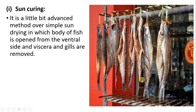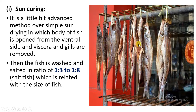The next method is sun curing, which is a more advanced method. In simple sun drying, the body of the fish is opened from the ventral side. The important internal organs and even the gills are removed, because gills contain a huge number of bacteria. After removing internal organs and gills, the fish is washed and then salted in a ratio of one to three for small size fish, or one to eight for large size fish. The salt concentration varies with the size of the fish.